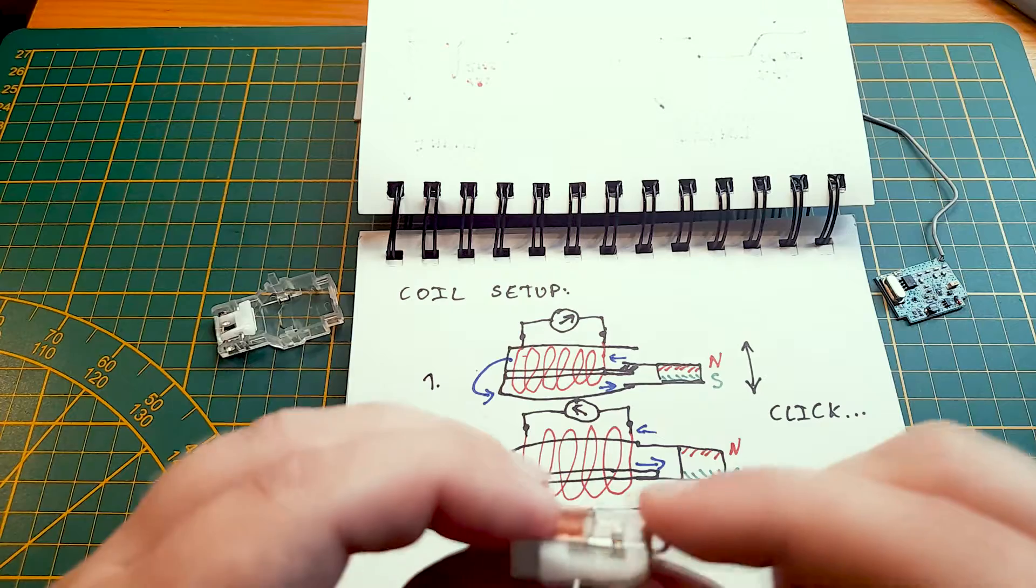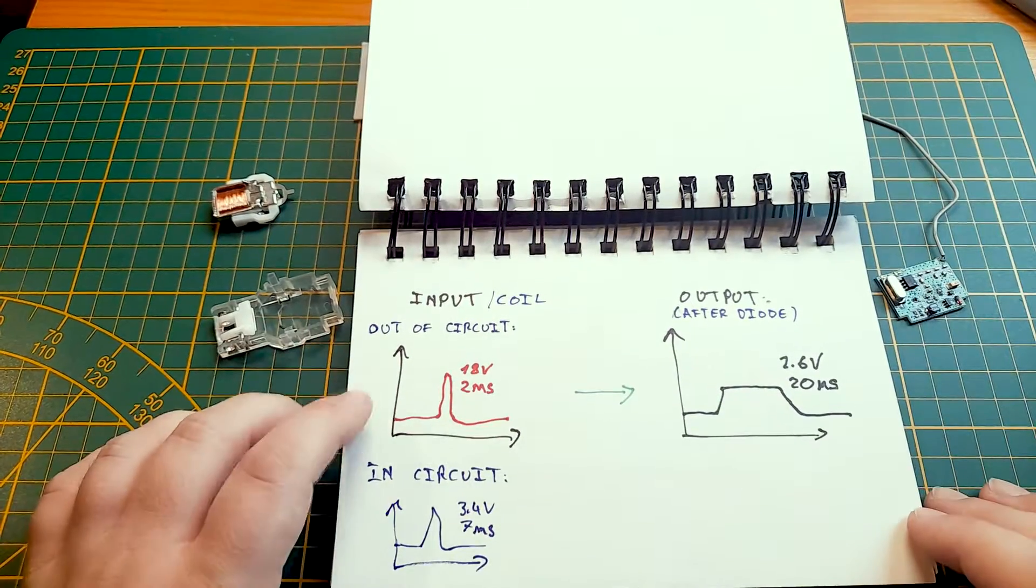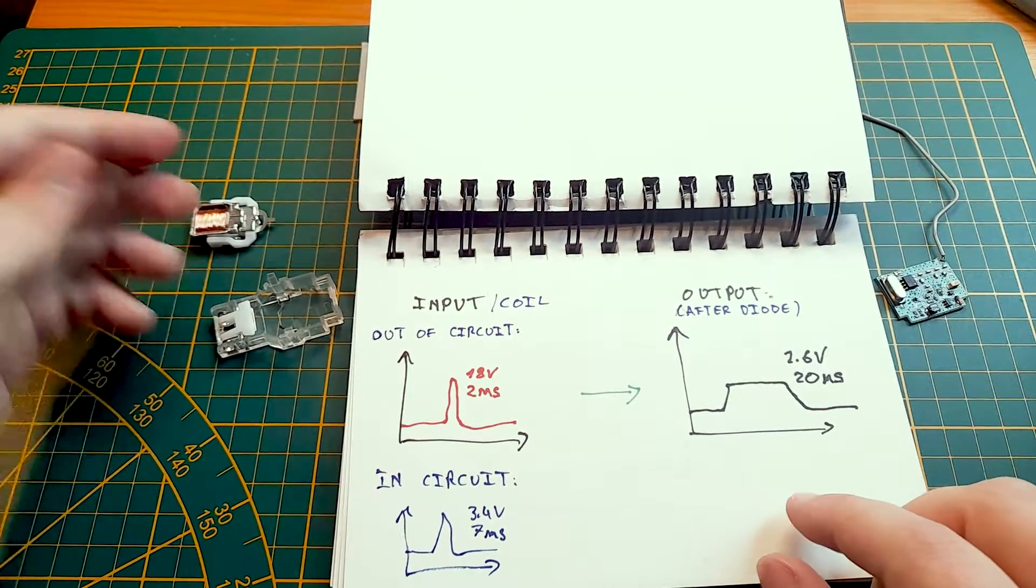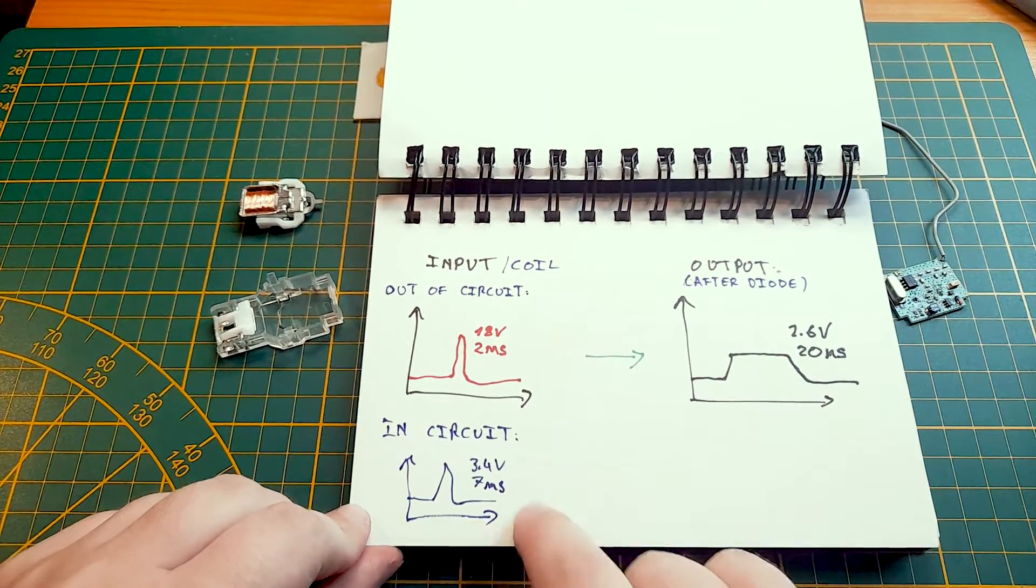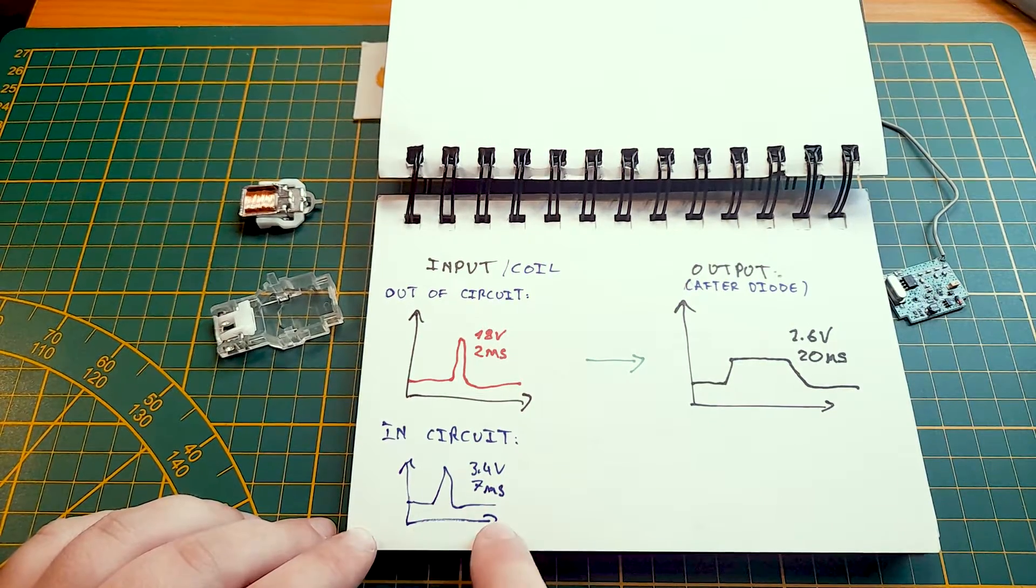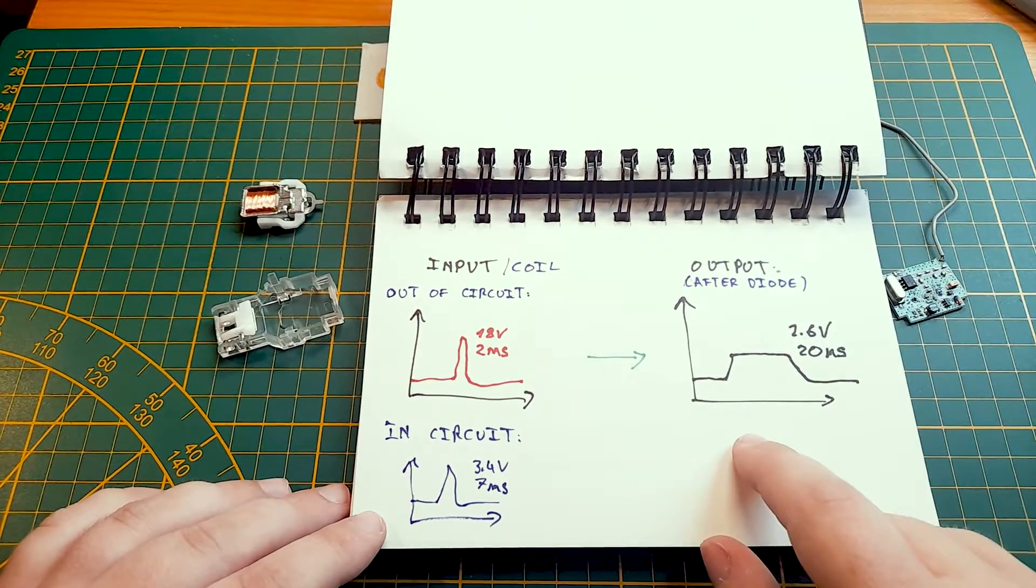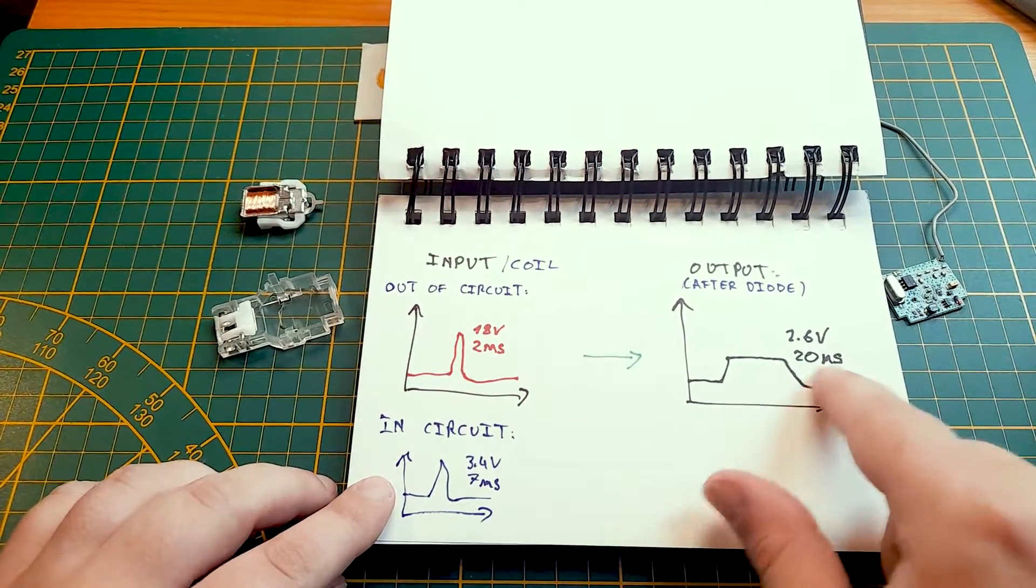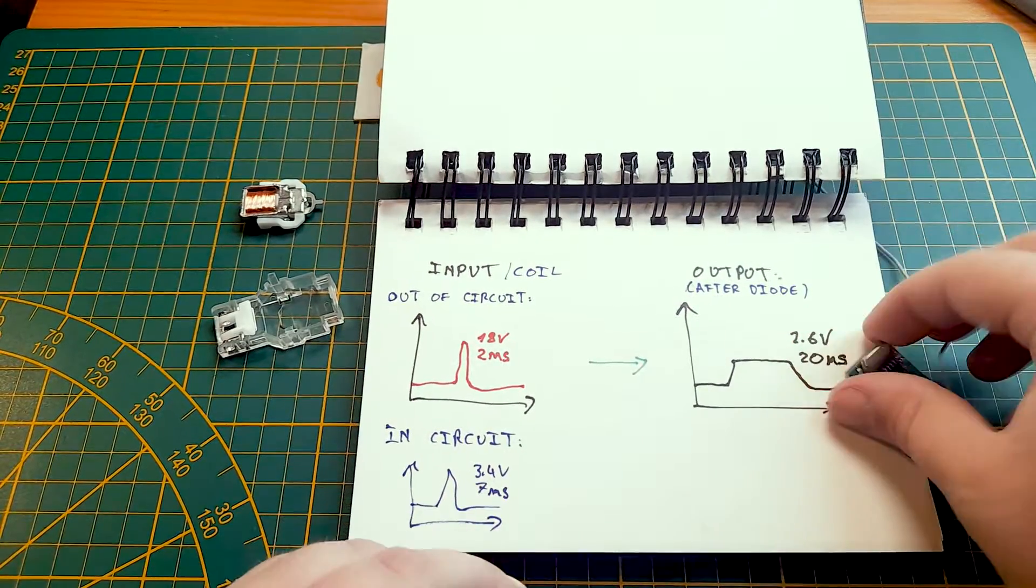So if we look at my oscilloscope measurements I managed to take of this coil out of circuit, we're actually able to get over 18 volts on these two output pins over a duration of almost two milliseconds. So actually quite a lot of energy being generated just from that simple push. In circuit, we have obviously a much lower voltage since it's being pulled down by the circuit, which I'll show you in just a second. So we have 3.4 volts for 7 milliseconds. This is a rough picture of the curve we get on the oscilloscope. And then as you'll see further in the circuit, there's a rectification diode and some capacitors. This is the power pulse that the board is getting. So 20 milliseconds of 2.6 volts on the capacitor side of this little board.